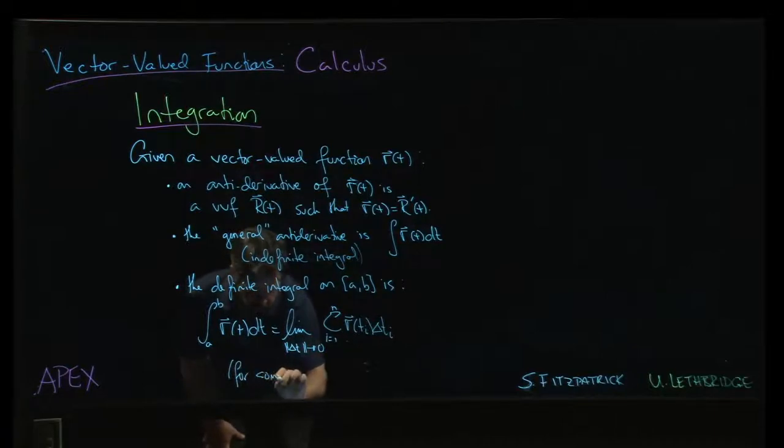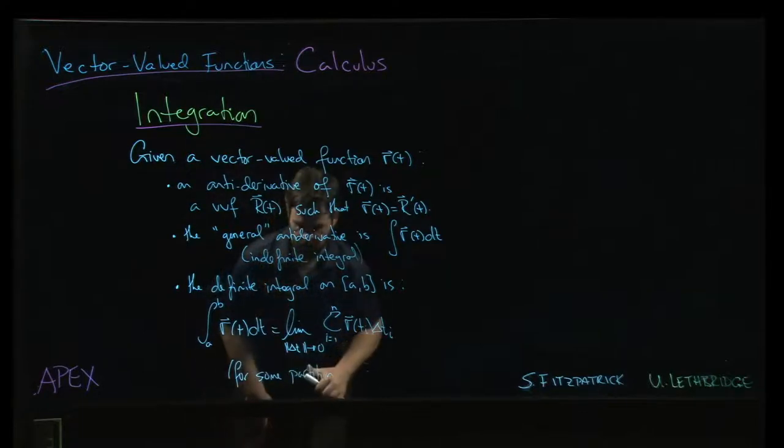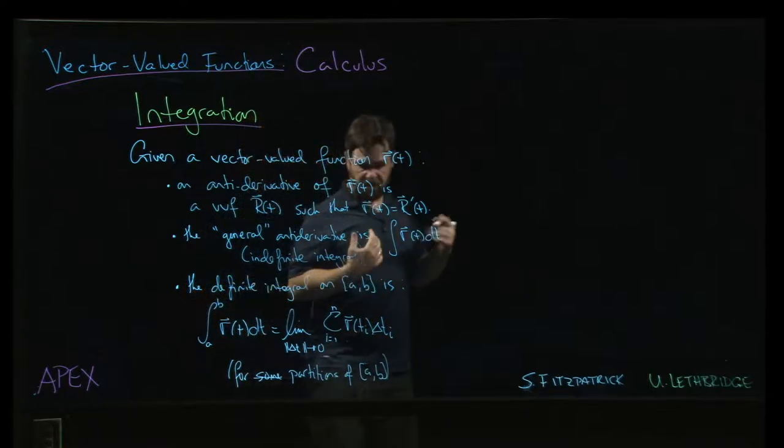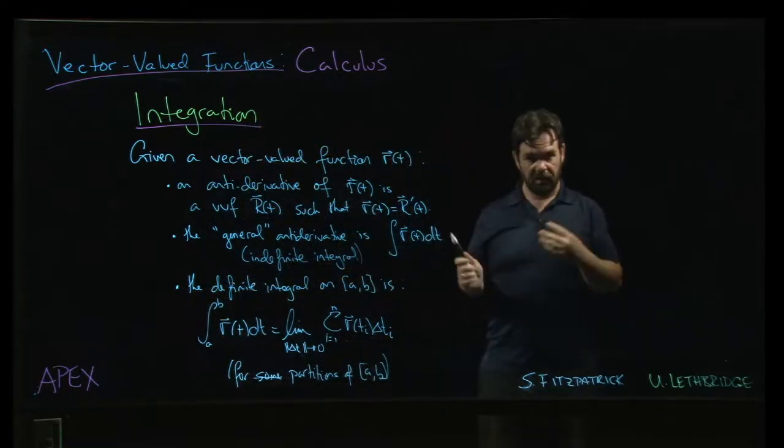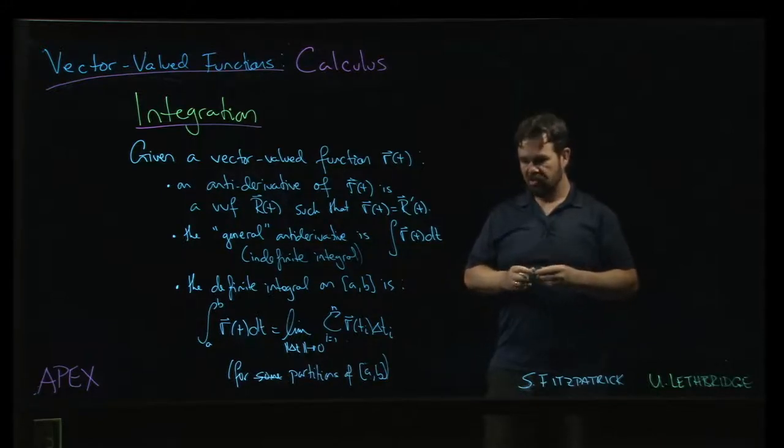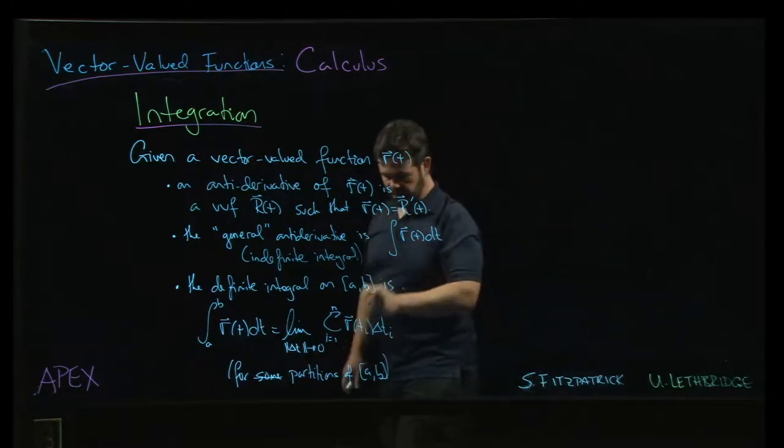and that's going to be for... not for some, but for partitions of the interval from a to b, right? So, for all possible partitions of the interval from a to b, you take the limit as the norm of the partition, so the length of the largest subinterval goes to 0.